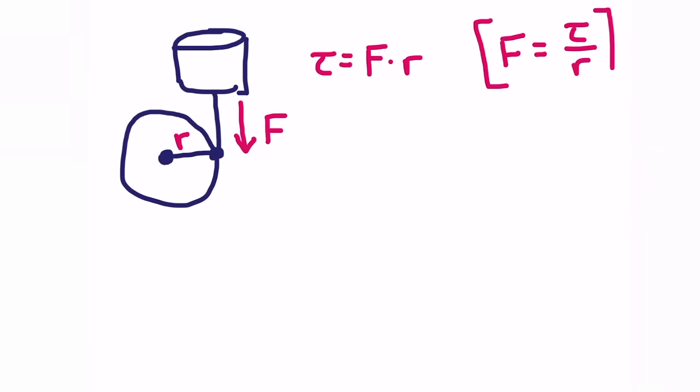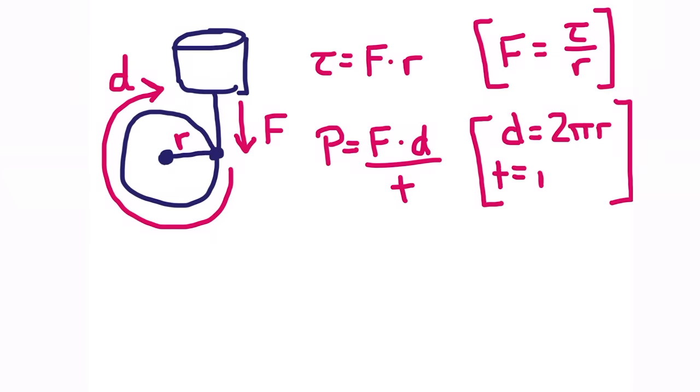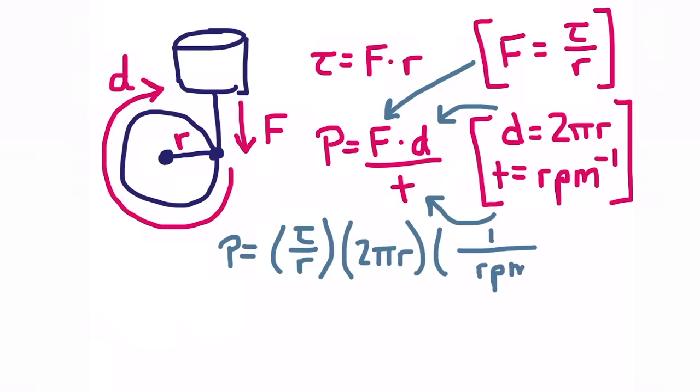First principles. We have a piston putting a force on a crank of some size. Torque is just force times that moment arm, and power is just a force acting over a distance in a certain time. The distance being the circumference, which takes the inverse of RPM in minutes to go round. In other words, power is torque over r times 2πr over the inverse of RPM.